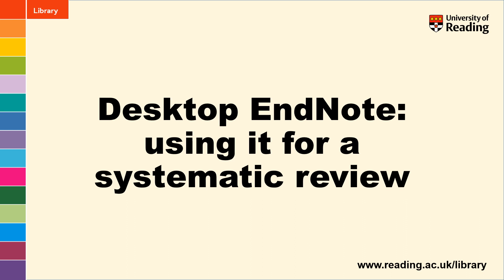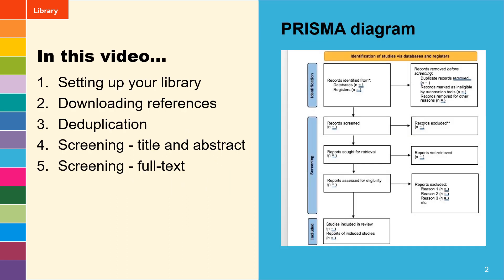Welcome to our video on using desktop EndNote for a systematic review. In this video we'll look at setting up your library ready for your systematic review, downloading references, deduplication, and then two stages of screening — both title and abstract and full text — so that you can successfully complete the PRISMA diagram shown on the right, which you need to record the filtering process when you're doing a systematic review.